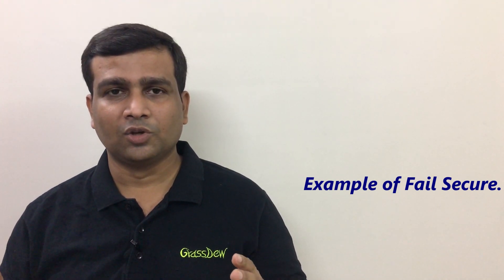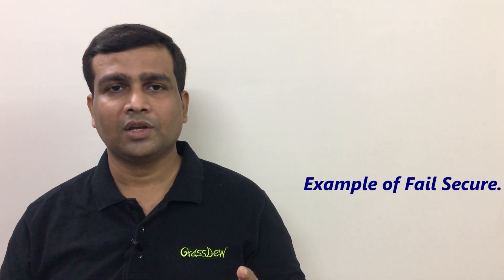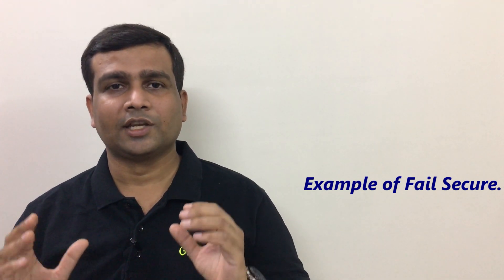In case of a bank, suppose there is some kind of power failure or some fire hazard or any such situation. In that case, the lockers of the bank should remain closed. Those should not be kept as open, so that is what we can call as Pell Secure.